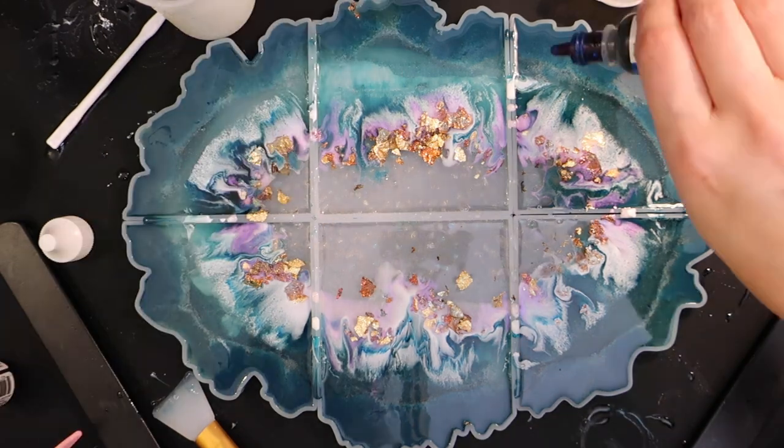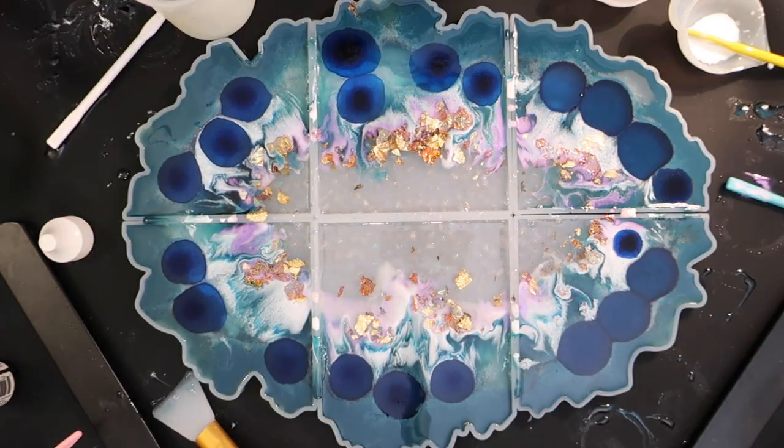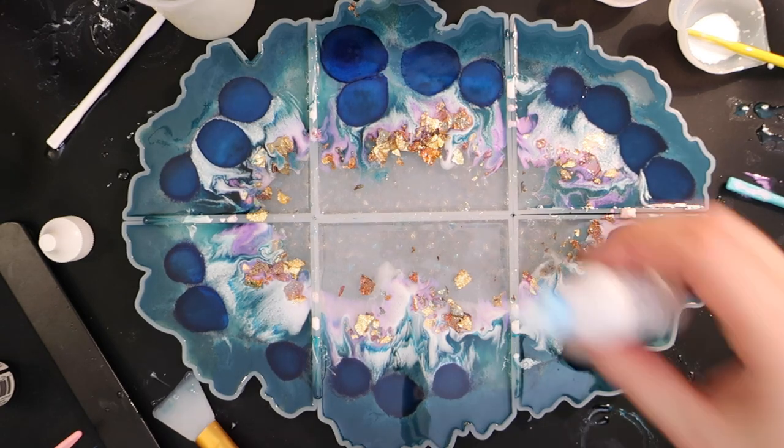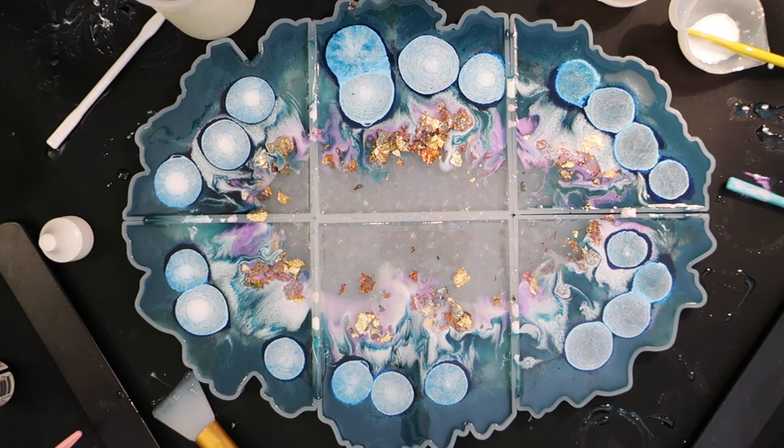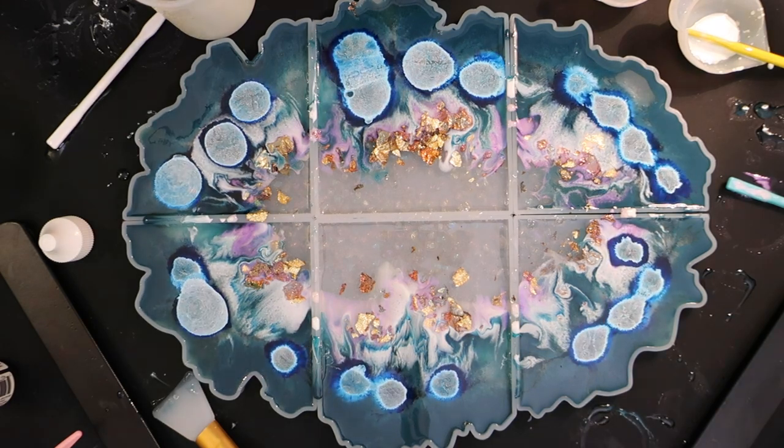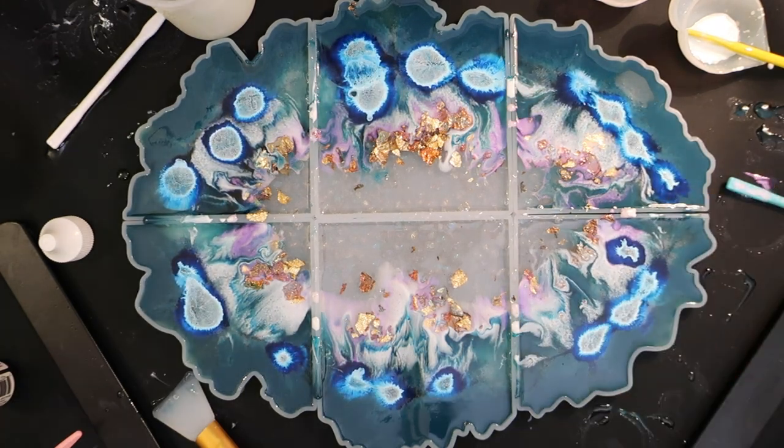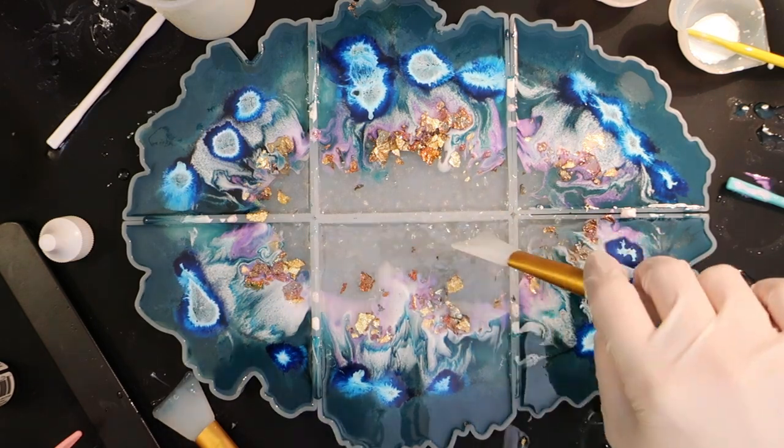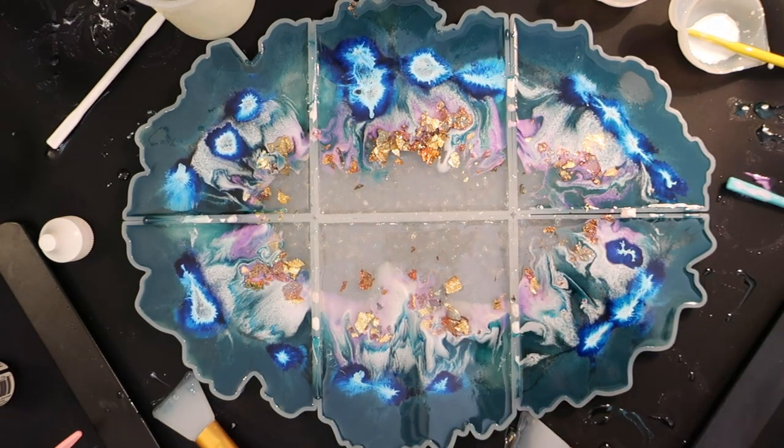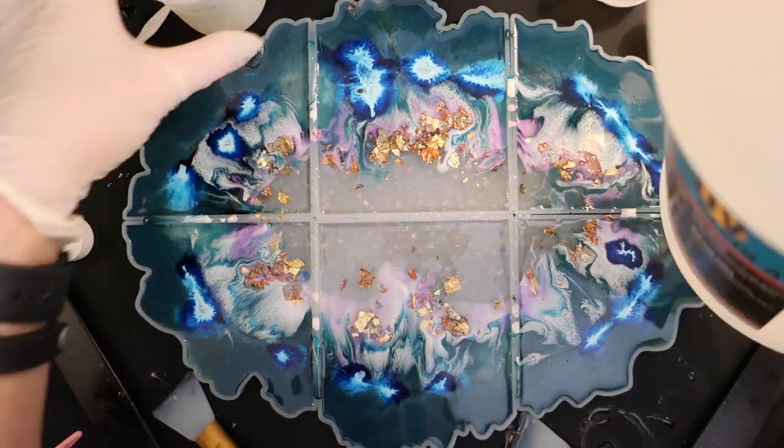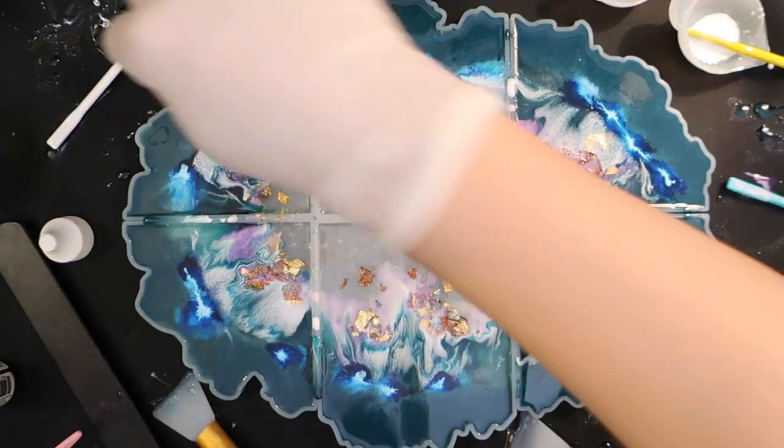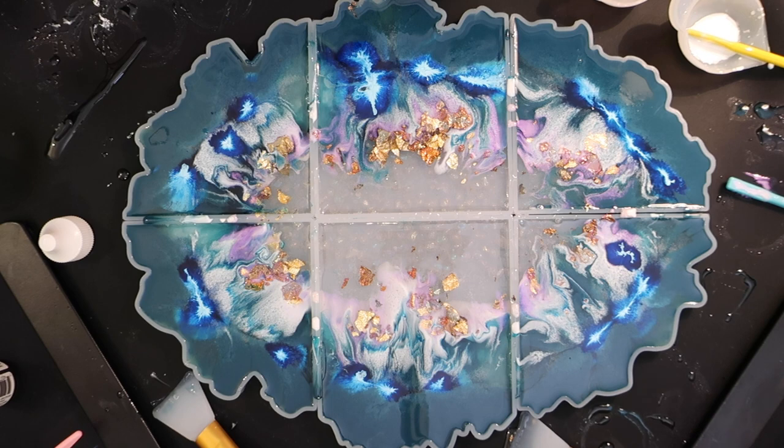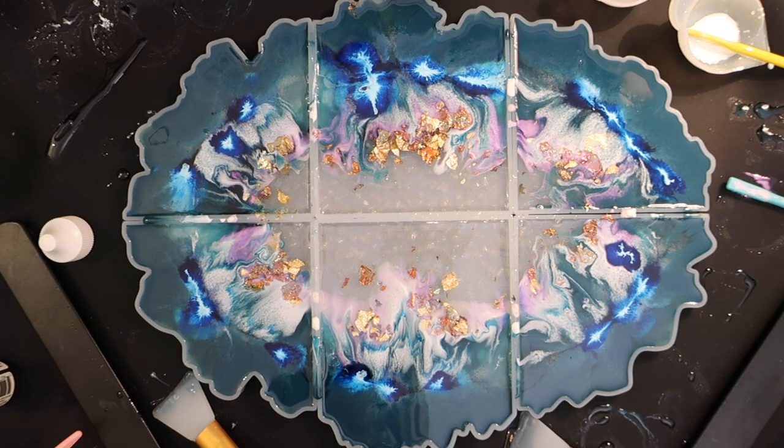And I do use the heat gun to move some of the resin around and create a cool effect. At this point, let's be honest, I could have stopped, could have walked away. It would have been fine. But you know what, this is my test piece. So I figured I would do some straight alcohol ink drops and attempt to get some of that petri dish around that clear rim. And you can also see me working the heat gun and moving some of those drops around.